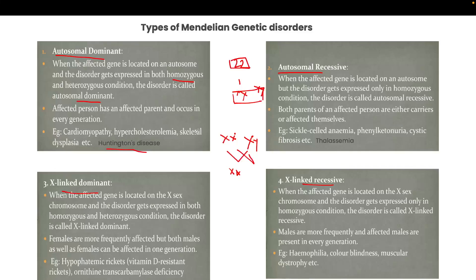X-linked dominant disorder occurs when the affected gene is located on the X sex chromosome and the disorder is expressed in both homozygous and heterozygous conditions. Females are more frequently affected in X-linked dominant disease because females have two X chromosomes, whereas males have X and Y.